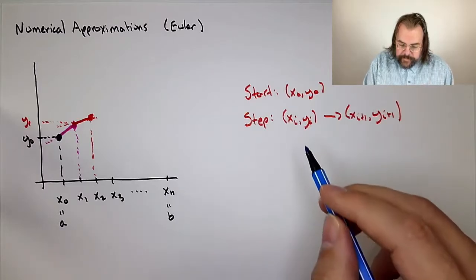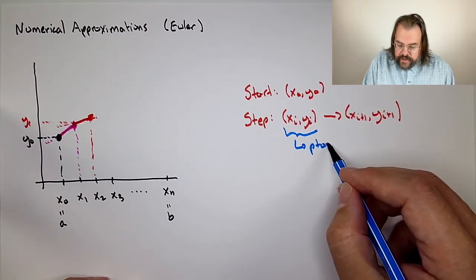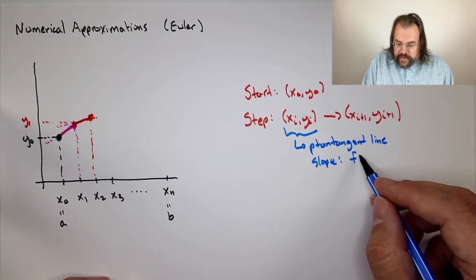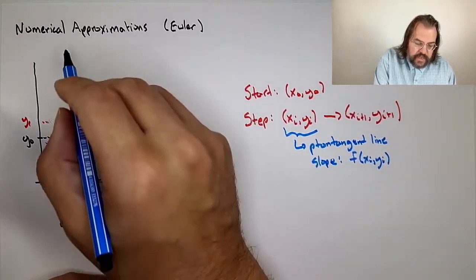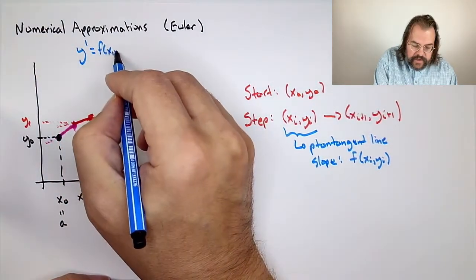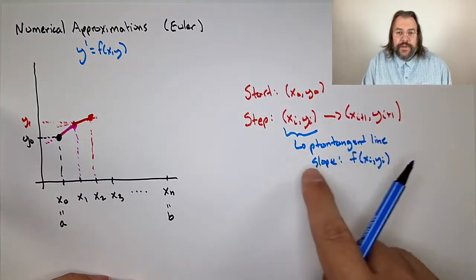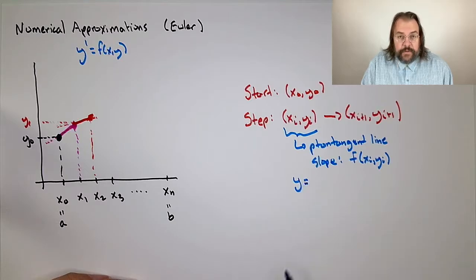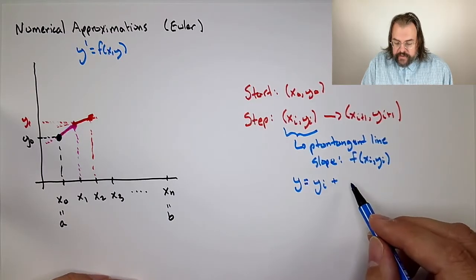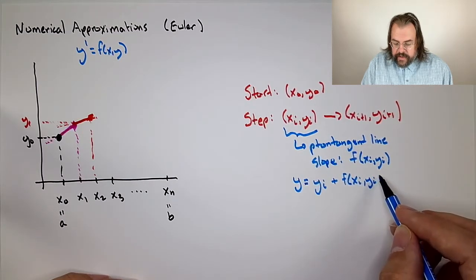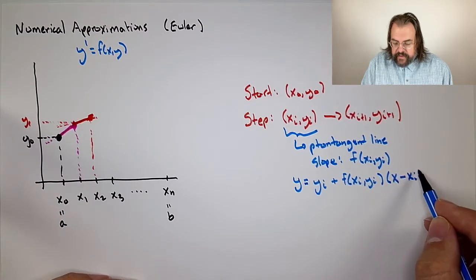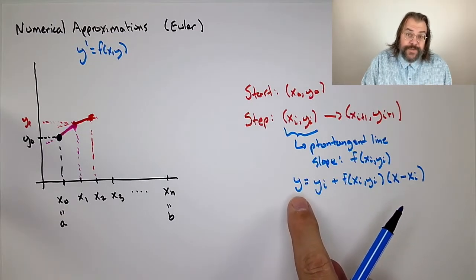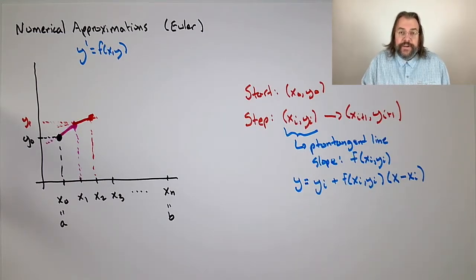What's our slope? Our slope is going to be f(xᵢ, yᵢ). I should say what we're doing is y' = f(x,y). I forgot to mention that at the start. But we have our point, we have our slope, so we have our tangent line. In particular, we can say that y = yᵢ + the slope f(xᵢ, yᵢ) times (x - xᵢ). This is point-slope written in a slightly different way. Instead of writing y - yᵢ = slope times (x - xᵢ), just move the yᵢ across.